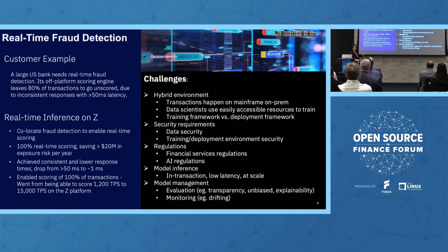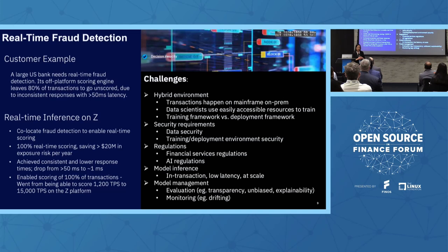What they did was co-locate the fraud detection model on mainframe, so the delay was reduced from over 50 milliseconds to under two milliseconds. They could then invoke the model for every transaction, and this could save them around $20 million in risk reduction. This is just one example, but if I asked you to build an AI model, what factors would you consider? What problems do you have to solve?